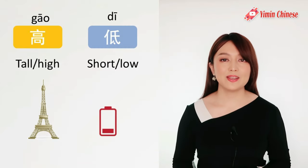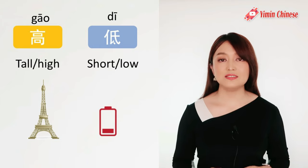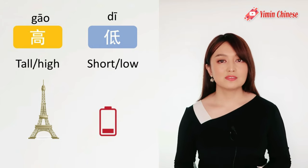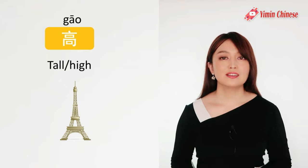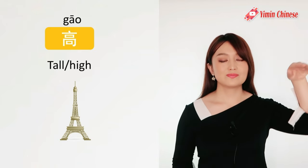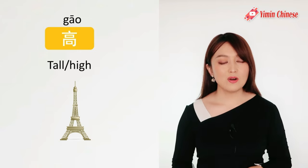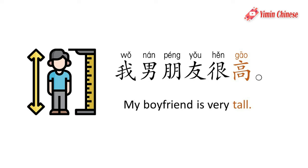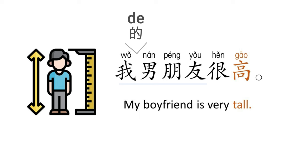下一组, next pair: 高和低, high and low. 高, it's a high flat tone: 高. 我男朋友很高, my boyfriend is very tall. 男朋友 means boyfriend. Here we skip 的 — we don't say 我的男朋友, because it's someone very close to us.